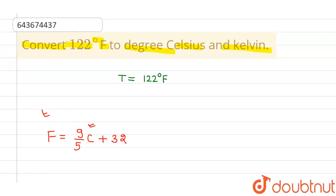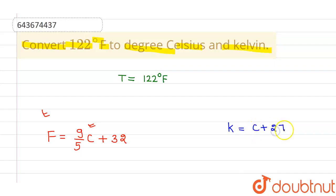And since we also have to convert into Kelvin, the formula for changing Celsius into Kelvin is given by K equals C plus 273.